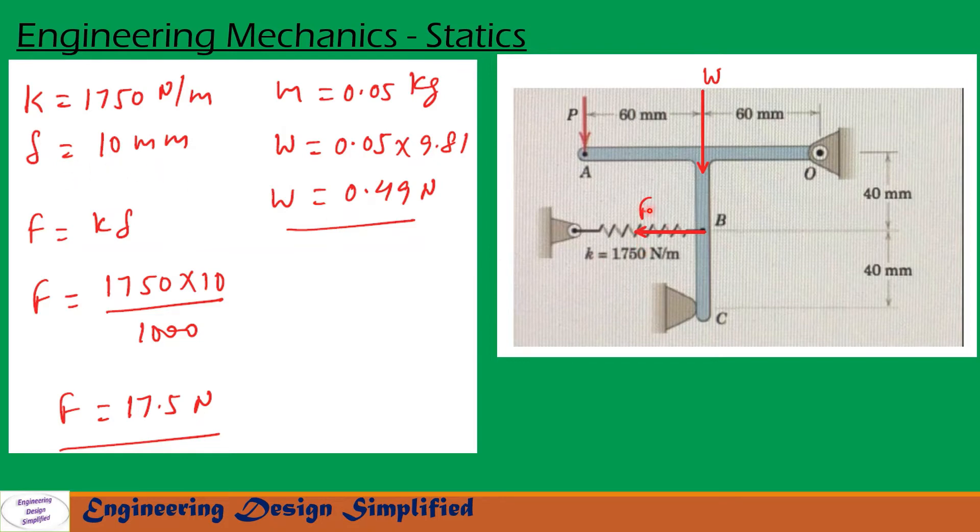The spring force at this point B towards left will be equal to F equals k times delta. So that is 1750 into 10 divided by thousand - thousand is because this stretch is given in millimeter, so to convert that millimeter into meter we are dividing by thousand. So the force of the spring F equals 17.5 newton.